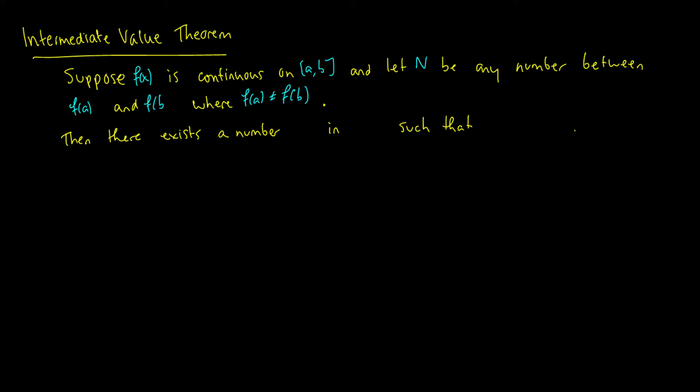So this first part is saying it's continuous, and we're going to pick the two endpoints, and some number N is going to be between those two endpoints. Then we say there exists a number c in our interval [a, b] such that f(c) is equal to N.